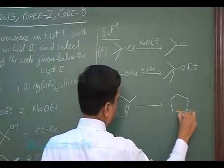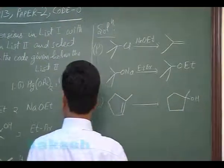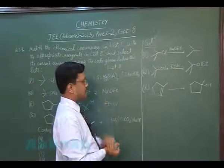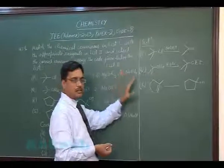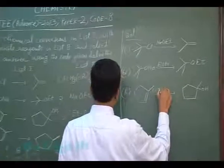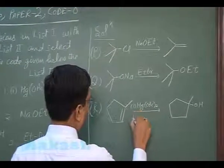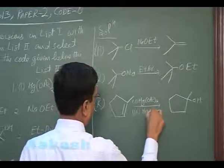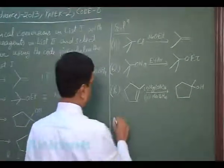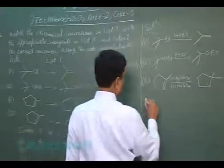R: In this conversion water molecule is added according to Markov rule and it can happen with mercuric acetate and NaBH4. This is oxymercuration demercuration, first is Hg(OAc)2 and NaBH4. Here water molecule is added according to the Markov rule, so R matches with first.